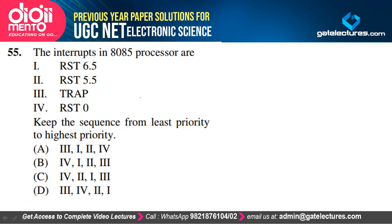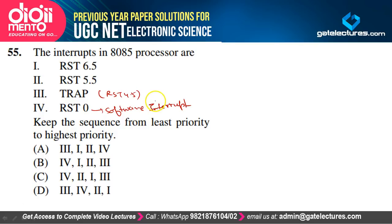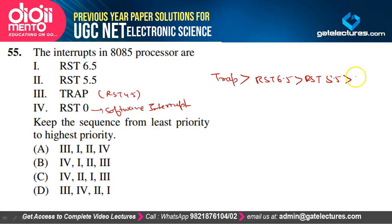8085 interrupts in decreasing priority order: TRAP (highest), RST 6.5, RST 5.5, RST 0 (software interrupt, lowest priority). Option C is correct.